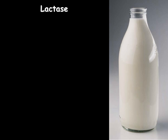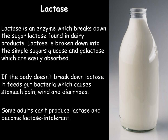The fifth industrial process is the production of lactose free milk, using an enzyme called lactase. Lactase breaks down lactose, the sugar found in milk, into glucose and galactose, both of which are easily absorbed by the body. If the body doesn't break down lactose, it continues through the system to the gut where bacteria feed on it, causing stomach pain, wind and diarrhoea. Some adults don't produce lactase and are therefore lactose intolerant, as they cannot break down lactose successfully.